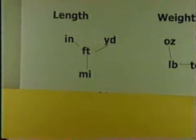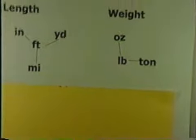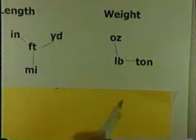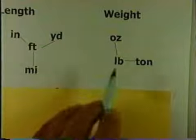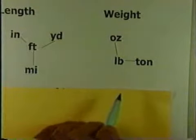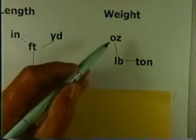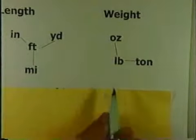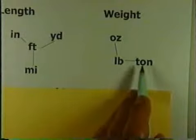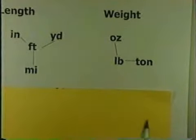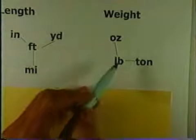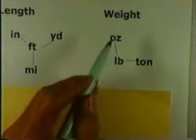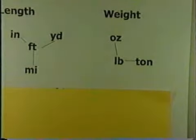With weight, I have two facts: one between ounces and pounds, and one between pounds and tons. So I can go directly from ounces to pounds and directly from pounds to tons. But if I want to go from ounces to tons, I must go through pounds first — ounces to pounds to tons.